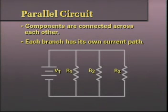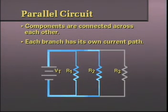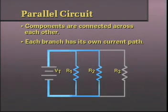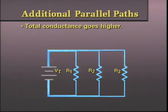Therefore, unlike series circuits where the same current must flow through all components, in a parallel circuit the total current is made up of the individual branch currents. As a parallel resistor or branch is added, an additional path for current is added and the total current goes up. We might also say that as additional parallel paths are added, the amount of conducting or the total conductance goes higher.